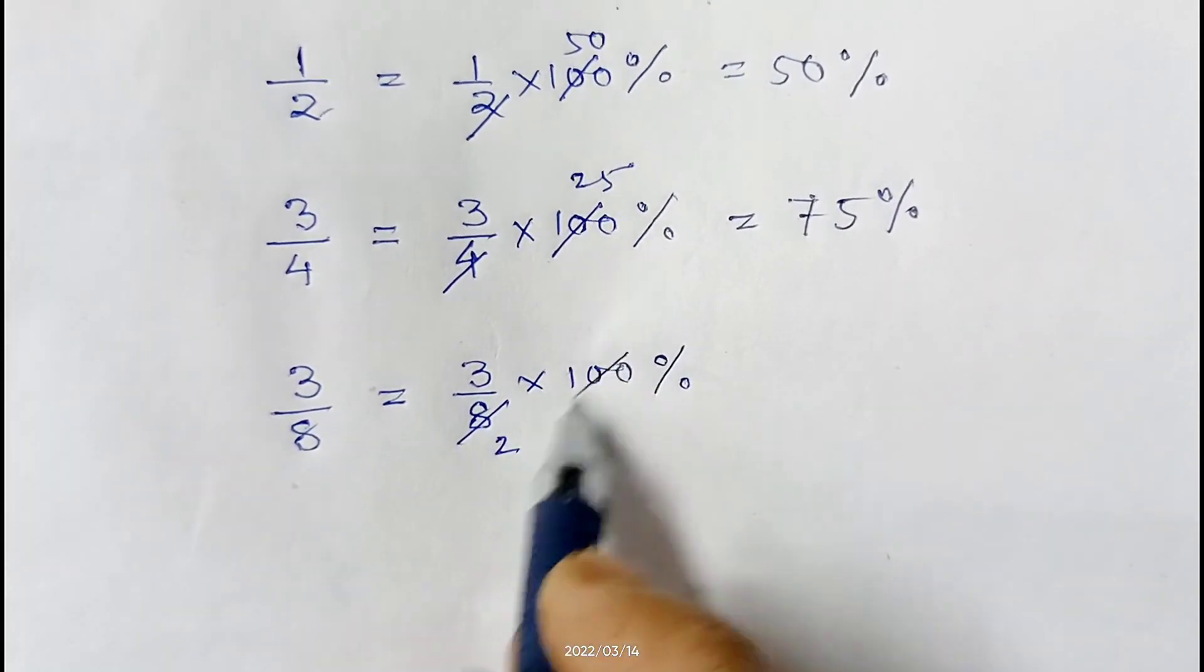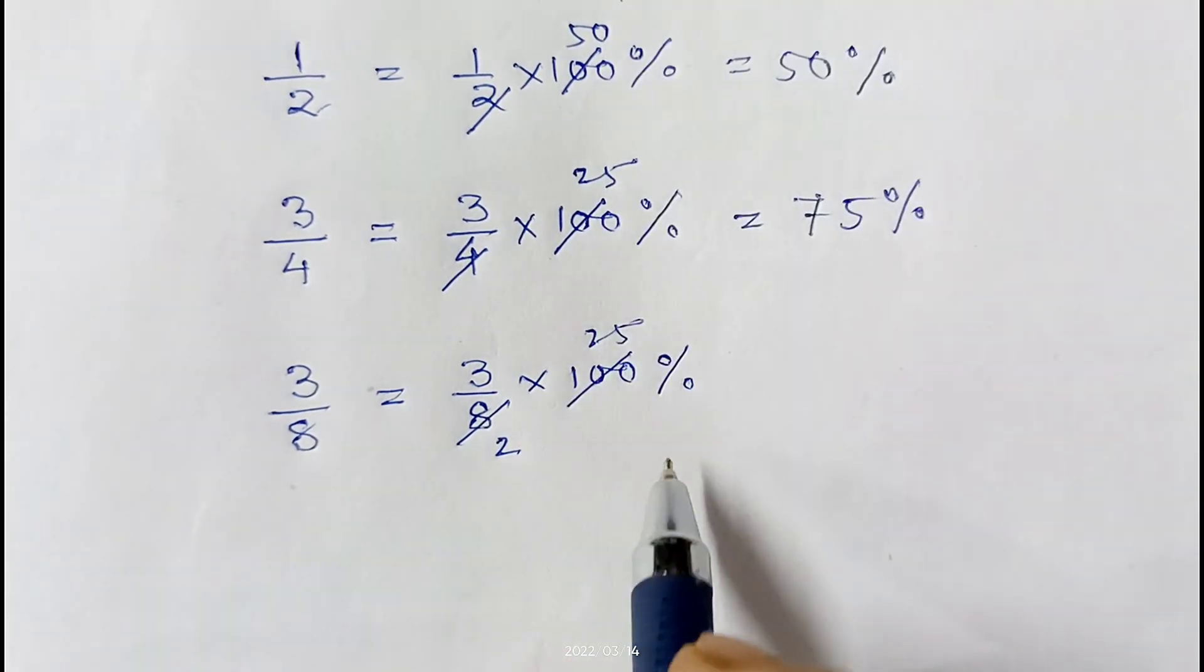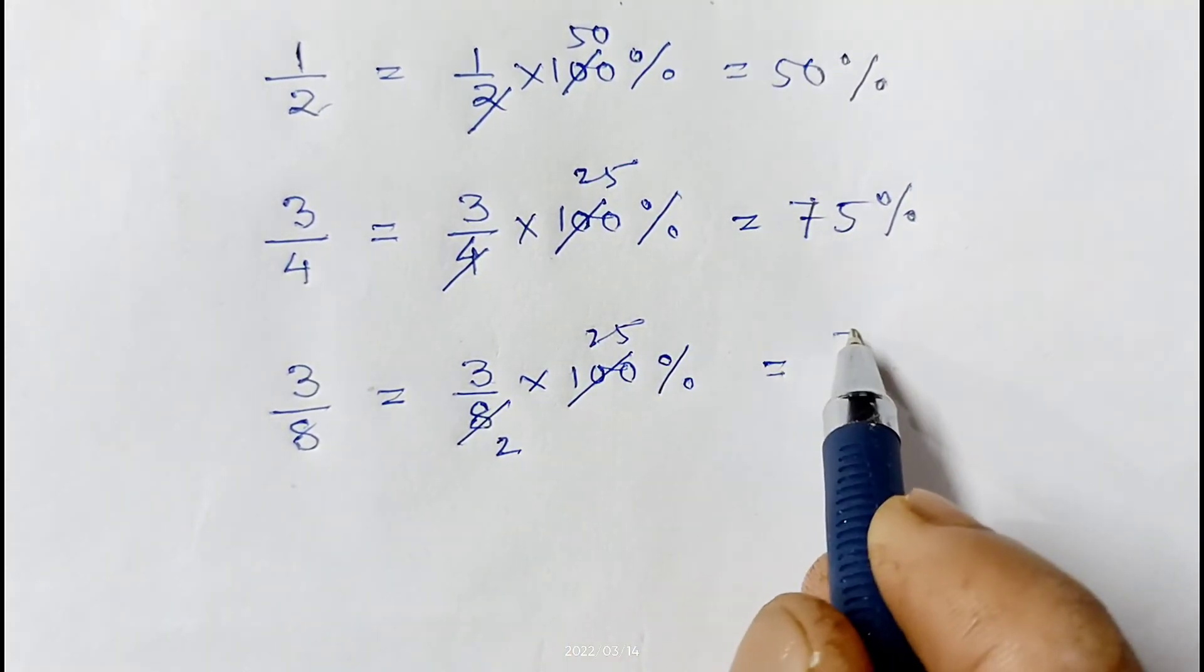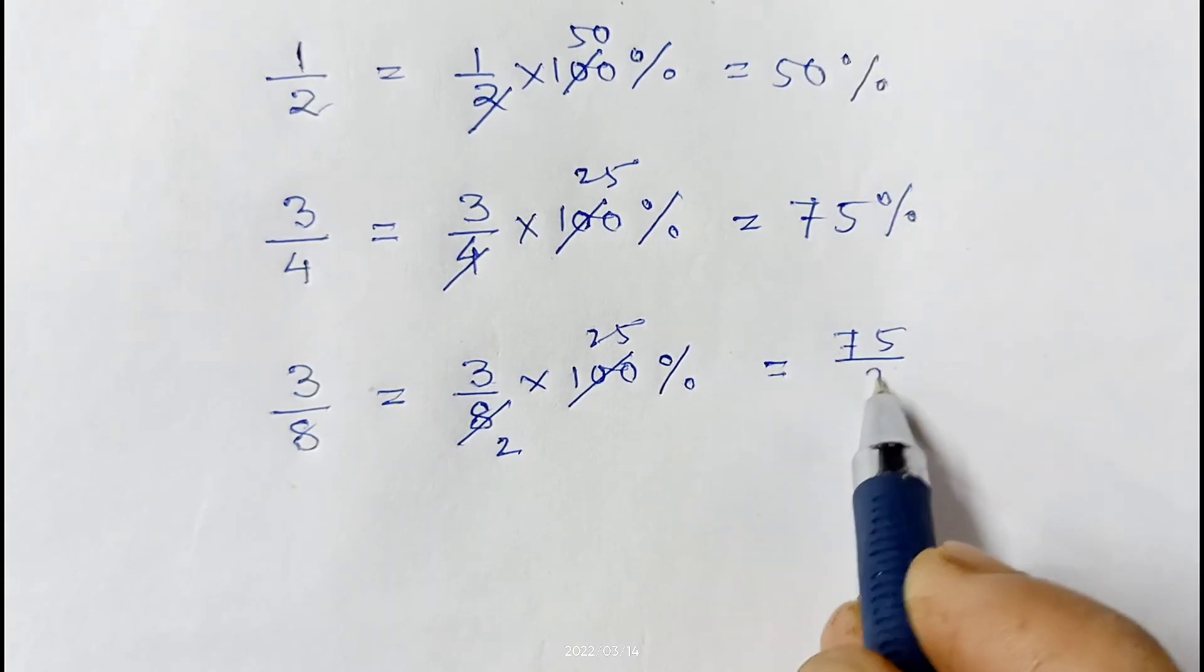Now 3 into 25, it will be 75, 75 divided by 2 percent, and 75 by 2 it is 37.5 percent.